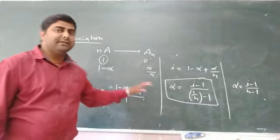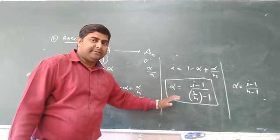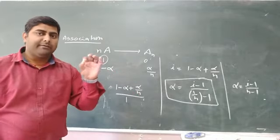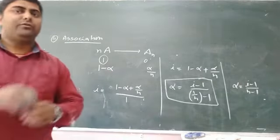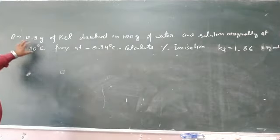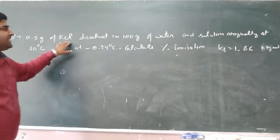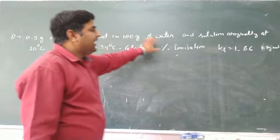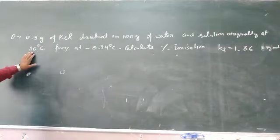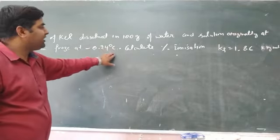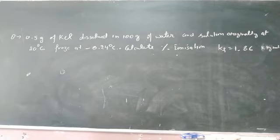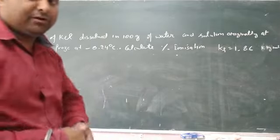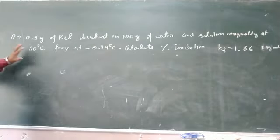Now we will solve a numerical based on this formula. The Van't Hoff factor i is applicable only for ionic substances where there are chances of association or dissociation. Question: 0.5 gram of KCl is dissolved in 100 gram of water and the solution freezes at −0.24°C. Calculate the percentage ionization of the solute. KF (cryoscopic constant) is given as 1.86°C/molal. Since KF is given, this numerical is based on depression in freezing point.